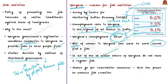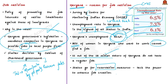One measure used as part of job nativism is reservation — reserving jobs for local people first and then asking companies to hire from other states. But why do states go for reservation rather than creating jobs directly? It is because they lack the power when it comes to job creation.